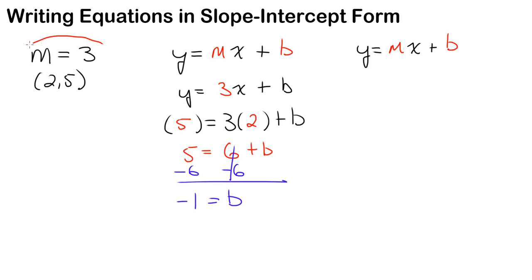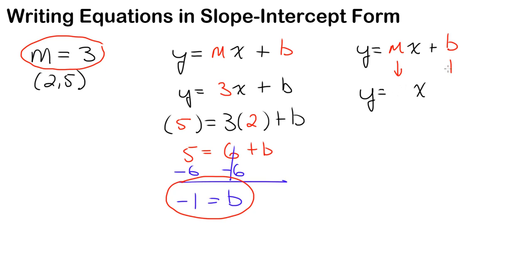Now I just take my slope, 3, and my y-intercept, negative 1, and plug them into my equation. So I'm going to write y equals 3x, and drop the y-intercept right here. My slope is 3, and my y-intercept is negative 1. So this is the equation that has a slope of 3 and passes through the point 2 comma 5, and the equation is y equals 3x minus 1.